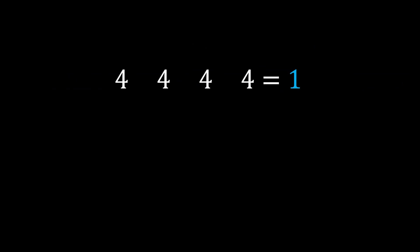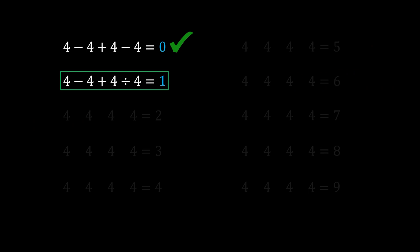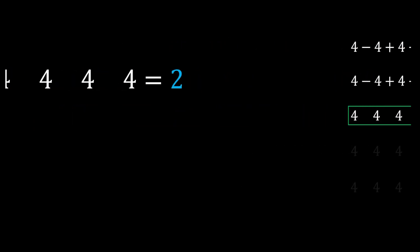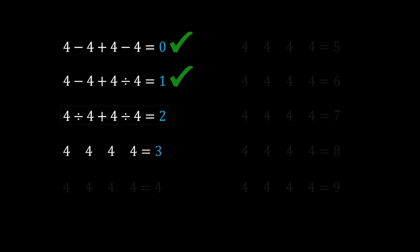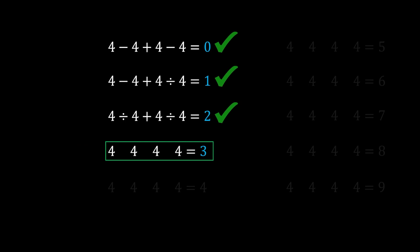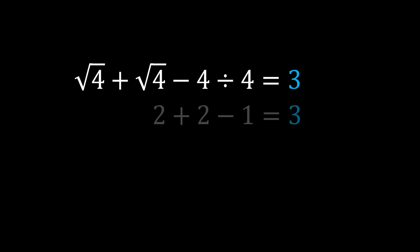Next, number 2: I solved this as 4 ÷ 4 + 4 ÷ 4, which is 1 + 1 = 2. Number 3: I used square root — √4 + √4 − 4 ÷ 4, which is 2 + 2 − 1 = 3.